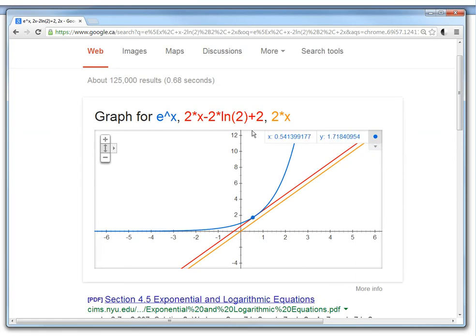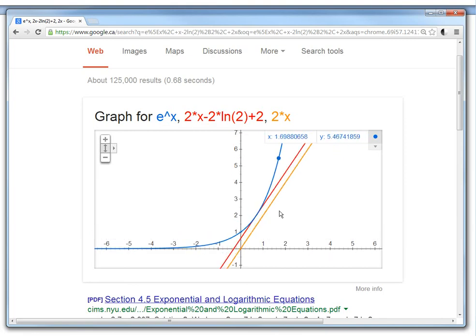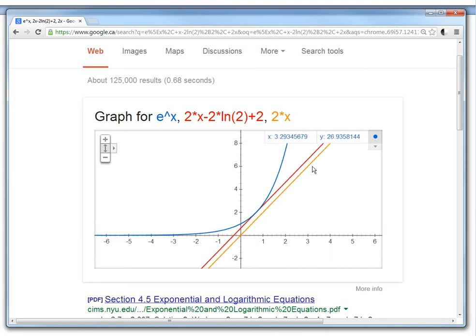And now here I've graphed all three functions with the Google graphing calculator. So here's e to the x in blue, and then 2x minus 2 ln 2 plus 2 is our line we were determining. As you can see, it is tangent on this curve, and it's also basically parallel to this y equals 2x, which goes through the origin right here.